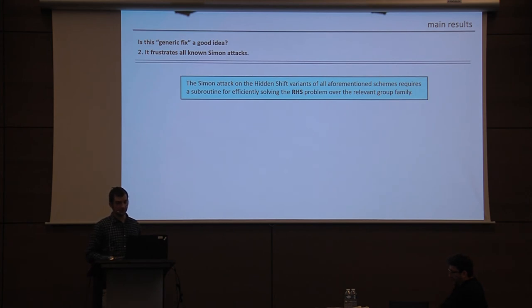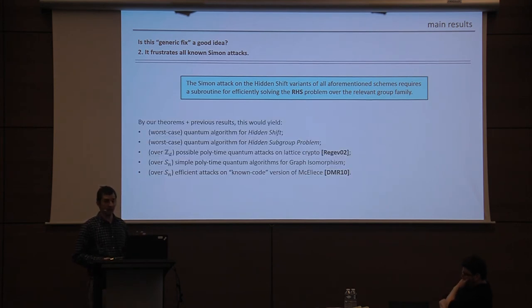So the other reason to think that this is a generic fix, that this fixes a good idea is that at least on the face of it, it seems to frustrate all of these attacks. So if you just try to run the same attack on these hidden shift versions of these constructions, then it really seems like you end up with needing a subroutine that solves the hidden shift problem. And by our theorems and some previous results, this seems pretty unlikely. So this would yield worst-case algorithms for hidden shift and the hidden subgroup problem. As I said over the cyclic groups, if it follows the only idea we know, it would lead to attacks on lattice crypto. Over the symmetric group, it would give us polynomial time-quantum algorithms for graph isomorphism and also some attacks on Macaulay's. So this seems unlikely.